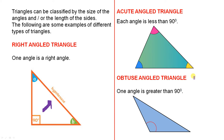The next type of triangle is the obtuse angled triangle. Here one angle is greater than 90 degrees — and that's this one here. So that angle is greater than 90 degrees, hence it's called an obtuse angled triangle.